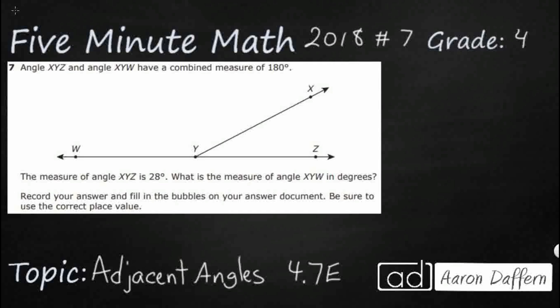So we have angle XYZ and XYW, they have a combined measure of 180 degrees. Let's make sure we understand what we're looking at here. When we're looking at angle XYZ, we can represent that with that symbol that looks like a less than symbol, which is actually the symbol for angle.